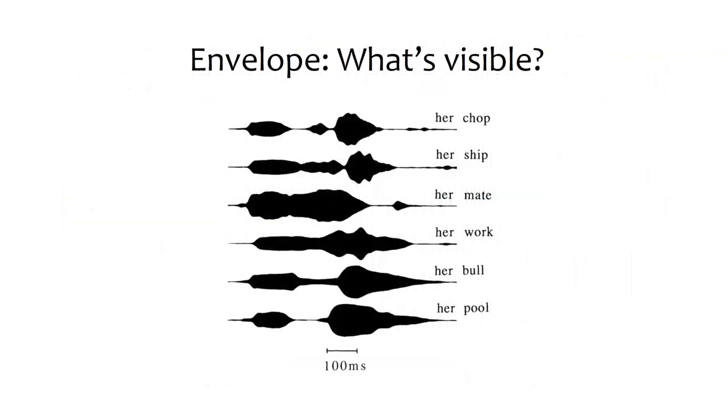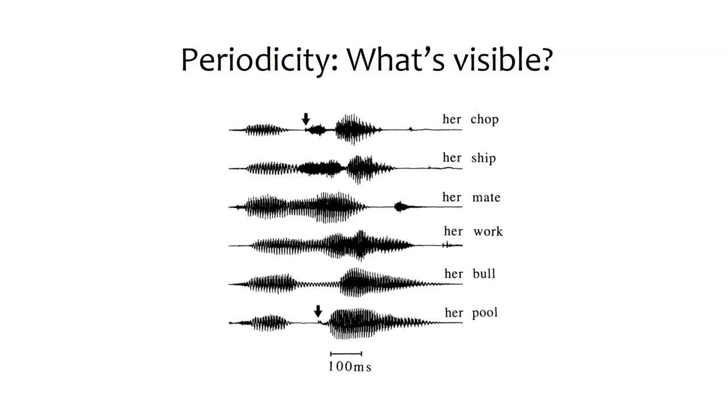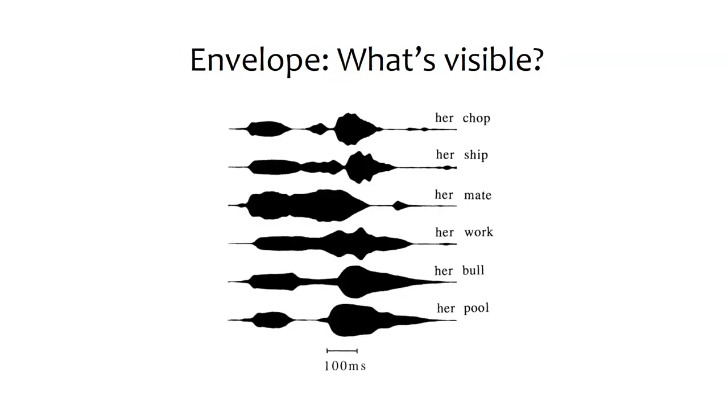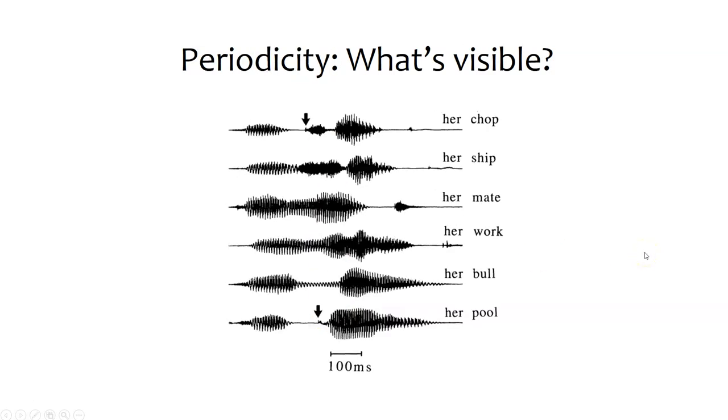So the final thing we'll show here is just a flipping back and forth between the envelope and the periodicity. So right here, you'll notice that a lot of the detail within the signal is just totally blocked out. And if we look at the periodicity, then we're seeing some of that detail. Now, we're still too zoomed out to see all of that detail, all the fine structure. But we can see that the envelope changes that would contrast these different phonemes like ch, sh, m, w, b, and pu, these are all recoverable in the envelope.